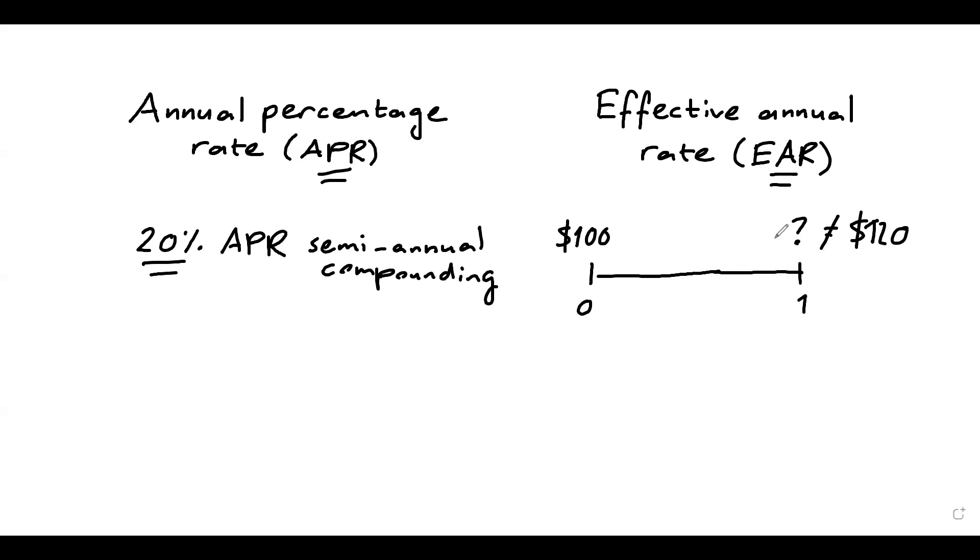Basically, your balance will be larger than $120. And what's going to happen is actually this. So instead of having a single period, you will have, in this case, two periods. Because within a year, there are two six-month periods.